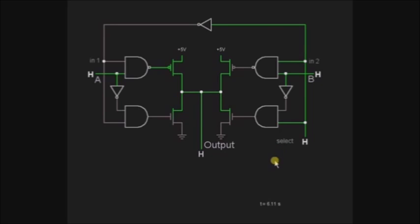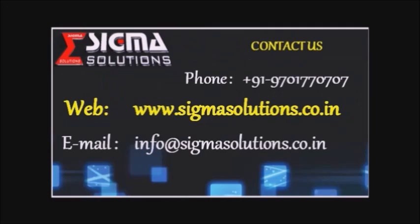This is the functionality of the 2x1 MUX. The MUX generally selects one of the inputs using a selection line — nothing but choosing one input by using a selection line. This is about the MUX. Thank you.